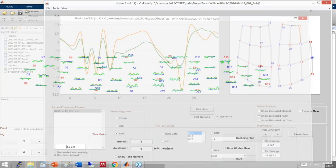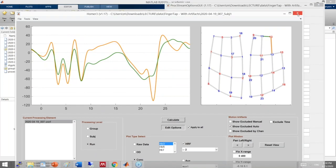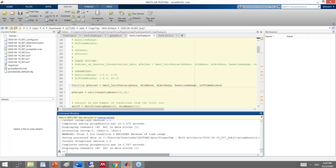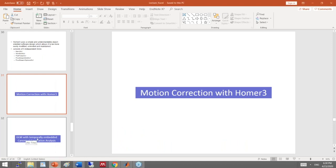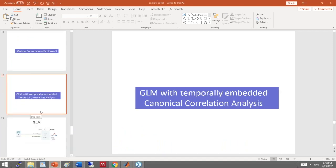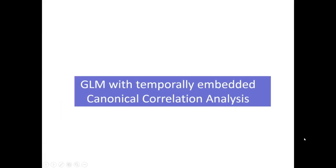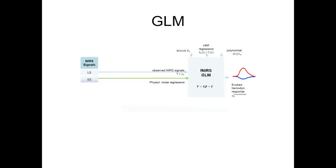Switching back to slides: we recently introduced a new method — GLM with Temporally Embedded Canonical Correlation Analysis, or GLM-tCCA. The details are published in NeuroImage 2020. We are now working on adding this functionality to Homer3, so it should be available soon.